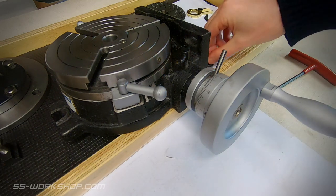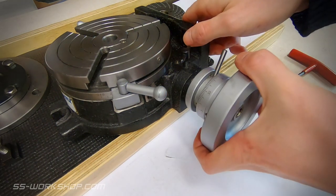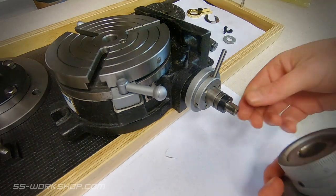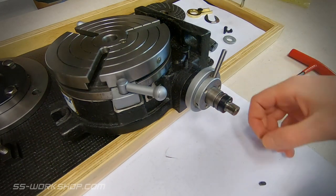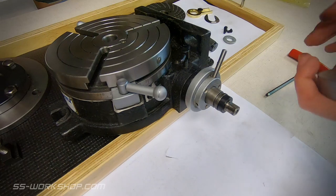As you remove the handle there's a key in the shaft. Make sure you collect this and put it away for safe keeping. It's not required with the dividing plates but we need it when you go to put the handle back on.